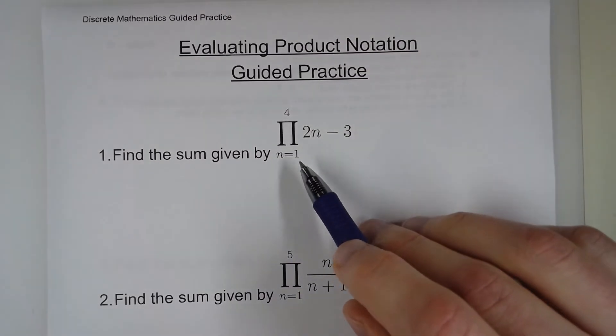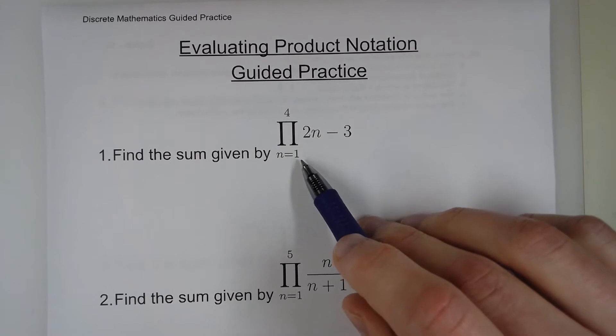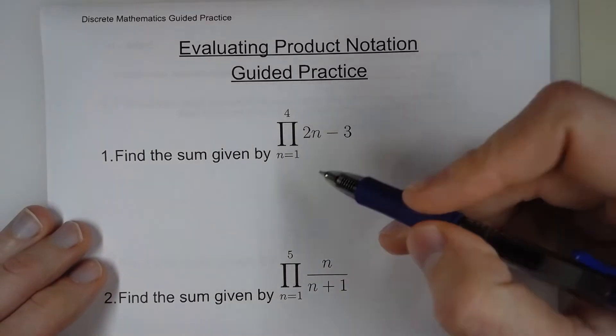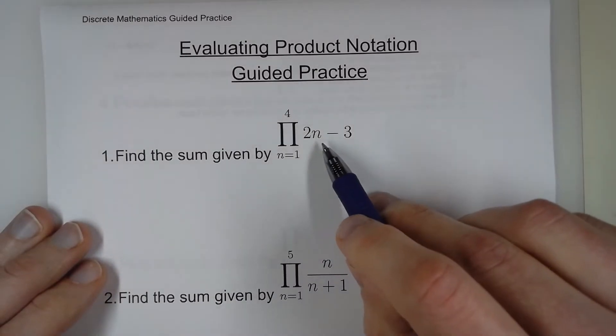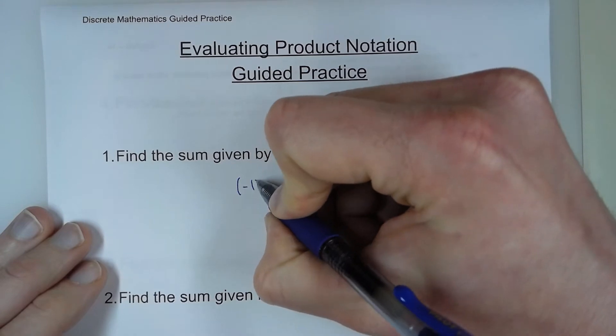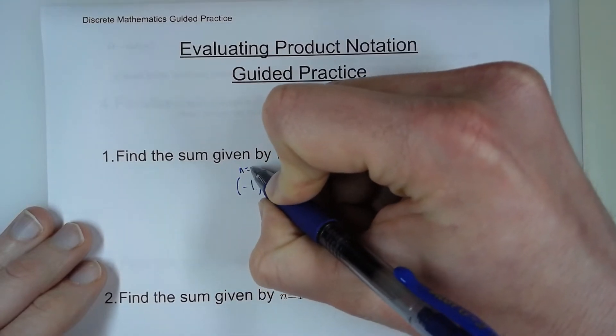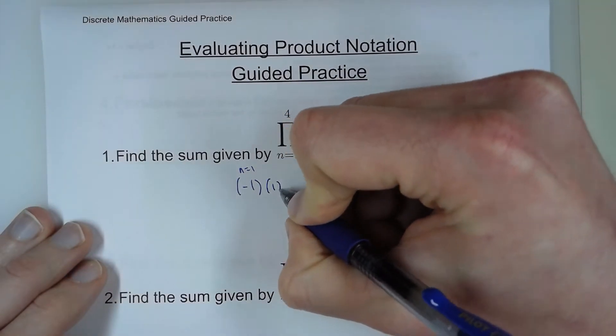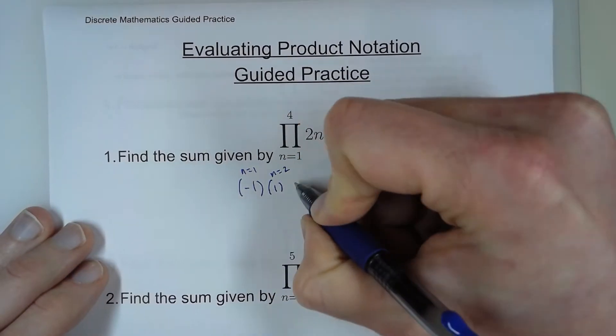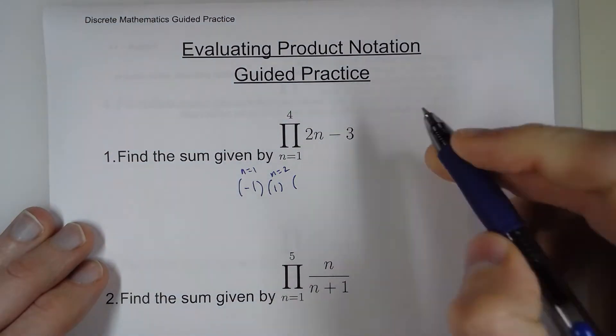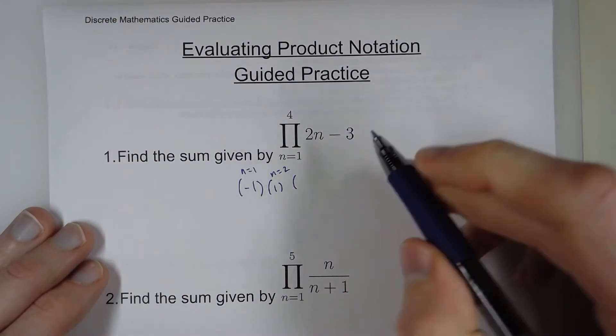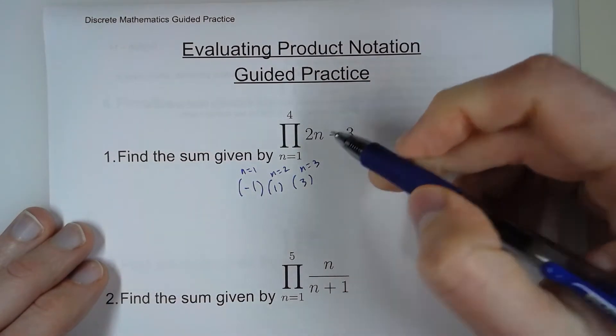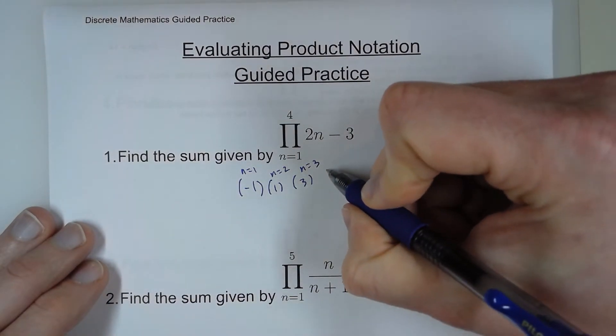We're still going to plug in the number down here to start with and stop when we reach this number. So if I plug in 1, 2 times 1 is 2 minus 3 is negative 1. That's my first term. If I plug in 2, 2 times 2 is 4 minus 3 is 1. If I plug in 3, 2 times 3 is 6 minus 3 is 3. And then finally plug in 4. 2 times 4 is 8 minus 3 is 5.